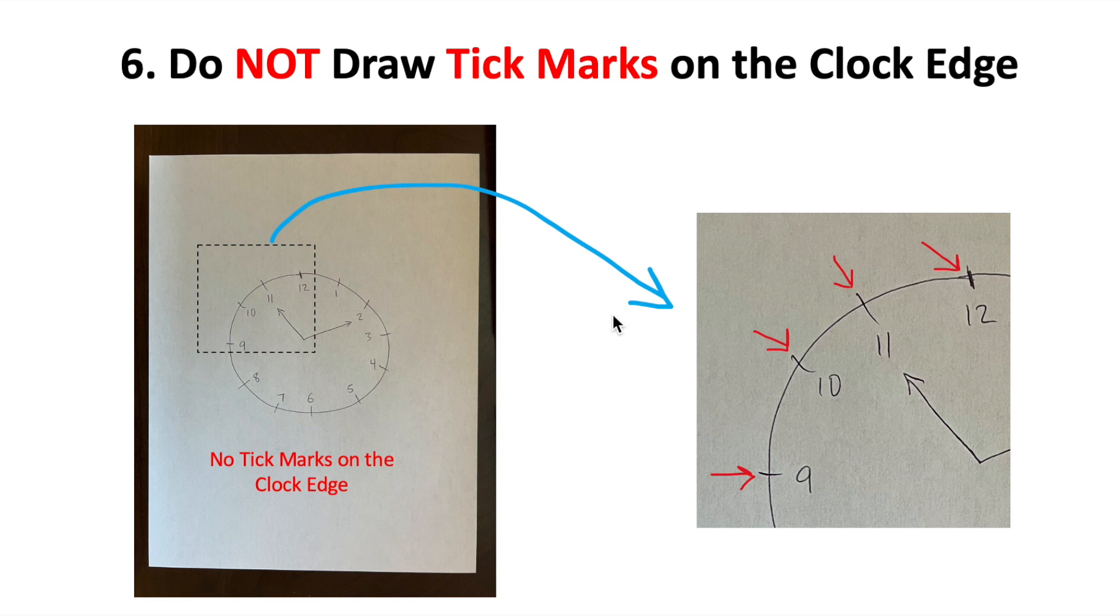And the sixth mistake is to include tick marks on the edge of your clock. You do not need tick marks. These are the marks that some people put next to numbers. If you add these marks, our software will think that your clock edge is very wavy. Therefore, do not include tick marks on the edge.